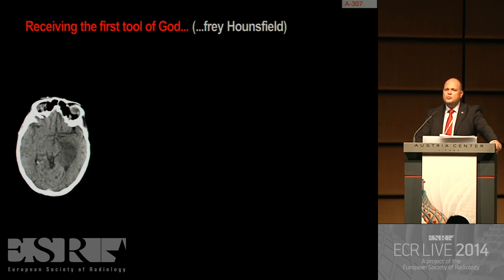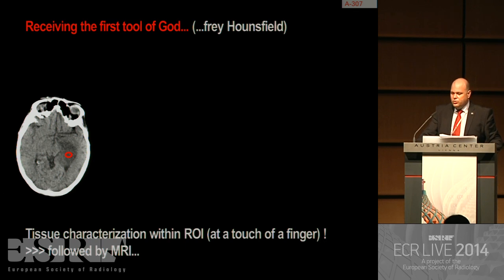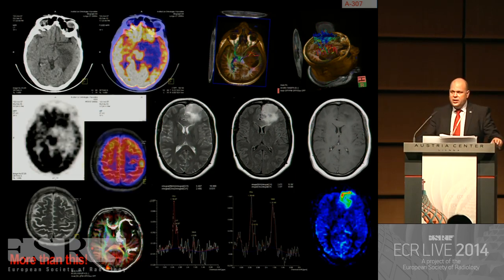I hope at this moment I will not be too blasphemous. When radiologists, especially neuroradiologists, obtained the first tool — actually the Hounsfield unit — the possibility of tissue characterization in vivo by definition of a region of interest and obtaining a value on the Hounsfield scale, we actually started a new era. This new era was followed by MRI techniques providing many possibilities, using different sequences to characterize the tissue we are dealing with.